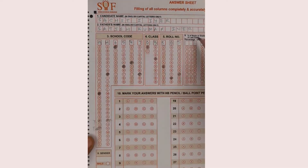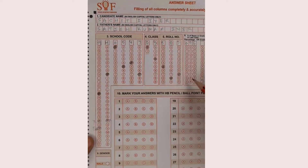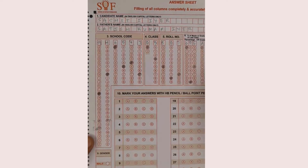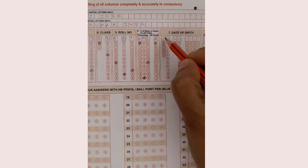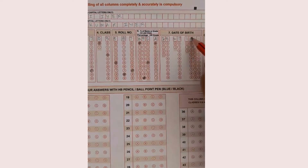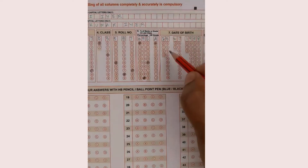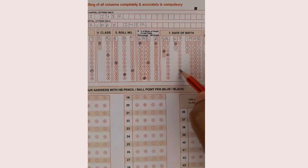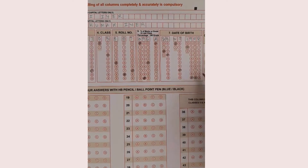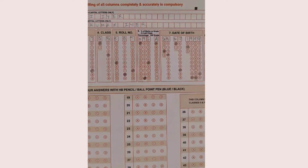After that, fill in the percentage of marks from your previous grade. For example, if you got 95 percent, fill 0, 9, 5. Then fill in your date of birth — for example 23-07-1998: 23 is the day, 07 is the month, and 1998 is the birth year. You can practice filling this before the exam.